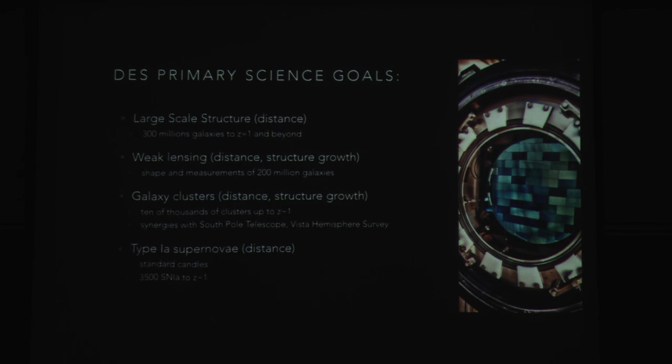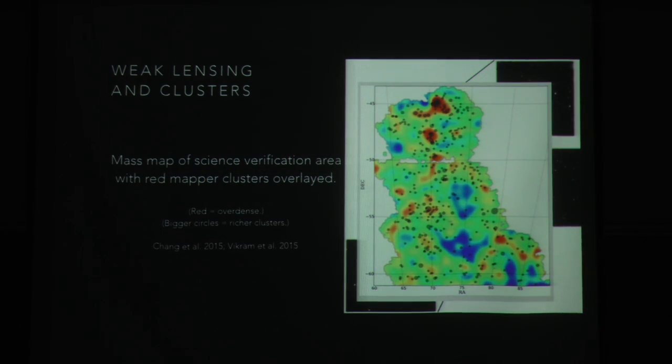Now, the primary science goals, as I mentioned for DES, are these. So the large-scale structure, just measuring the distance, we expect to measure 300 million galaxies out to a redshift of 1 and some beyond. We're also going to do weak lensing. The shape measurements, we expect, should be successful about 200 million of those galaxies. And then galaxy clusters, which you can use to measure the cosmology as well, we'll have tens of thousands of these. We're also using these hundreds of millions of galaxies that we're discovering as foregrounds for the cosmic microwave background to look at things like integrated Sachs-Wolfe effect, Sunyaev-Zeldovich, and any effects where you have lensing of the CMB due to foregrounds.